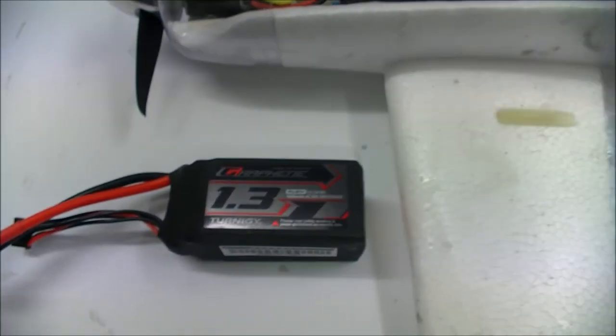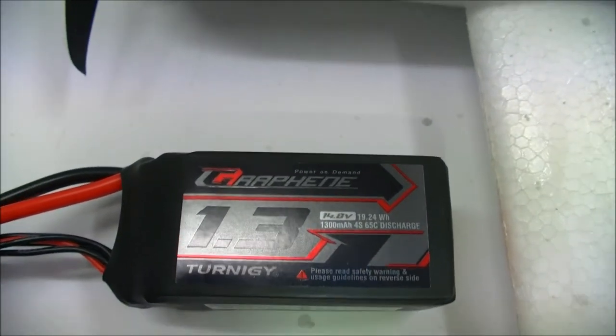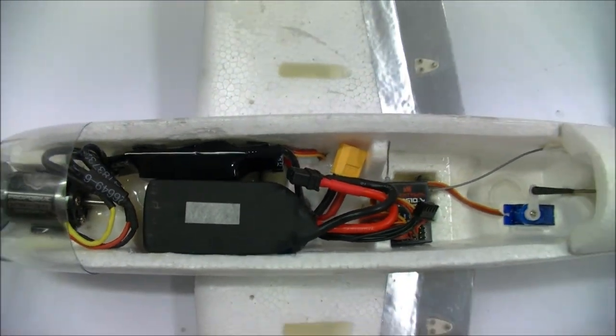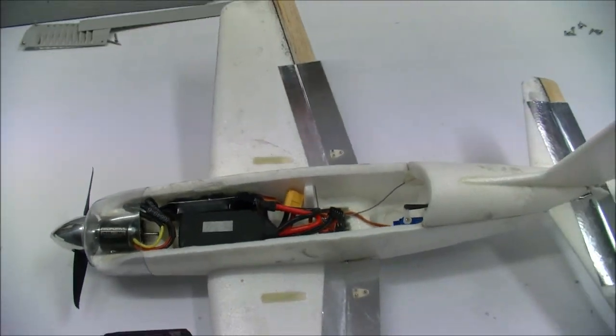I've also decided to use the Turnigy Graphene 1.3 4 cells. They fit in nicely as you can see. The next step is now to give it a coat of paint.